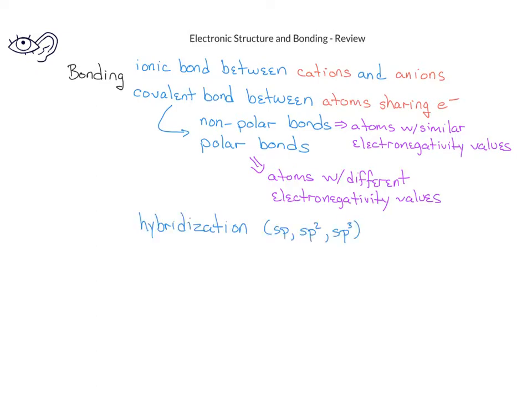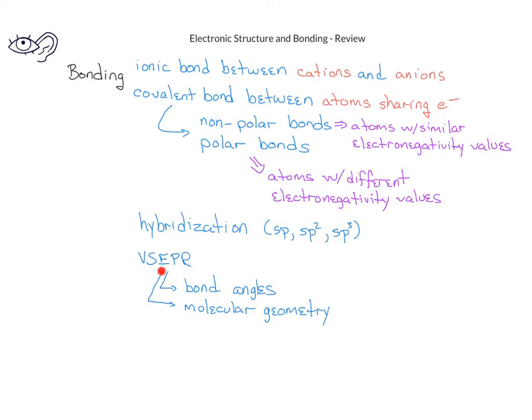You might also want to review your notes on the concept of hybridization, which includes sp, sp2, or sp3 hybridized atoms. It will also help if you recall from your general chemistry the idea of VSEPR, or valence shell electron pair repulsion. This model will also lead you to review the ideas of bond angles as well as molecular geometry.